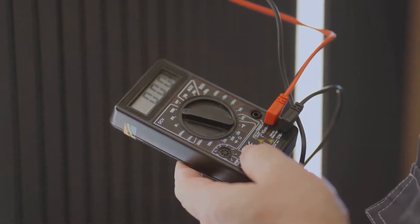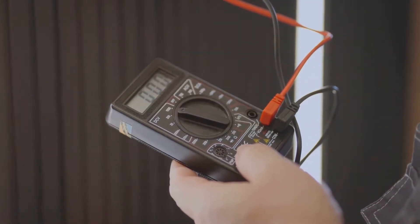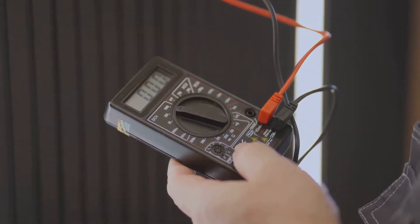We'll be using the resistance setting on our multimeter today. Don't worry, it's not complicated - we're basically going to see how easily electricity flows through the solenoid coil. There are two main types of multimeters: analog and digital.